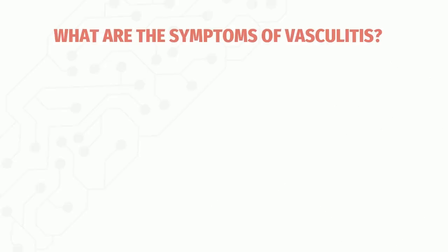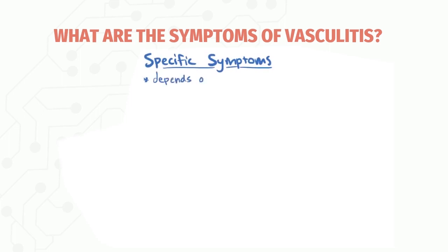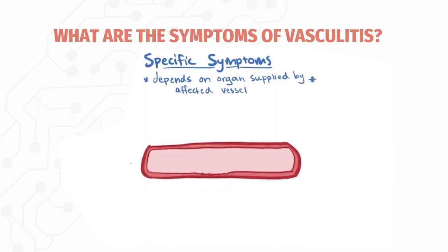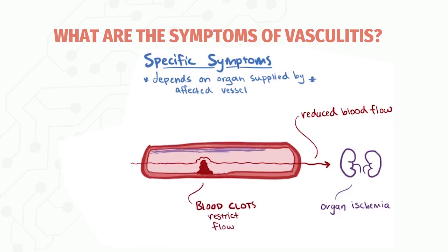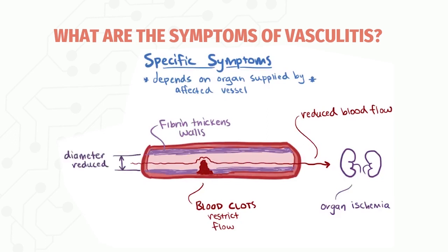The clinical manifestations of vasculitis are variable and specific to where the vasculitis is occurring and which organ is supplied by that blood vessel. Vasculitis causes organ ischemia in two ways: first, blood cells clot onto the exposed tissue factor and collagen inside the vessel, forming blood clots that restrict blood flow; second, fibrin deposited during healing thickens the vessel wall, which bulges inward, reducing the diameter of the vessel lumen and restricting blood flow.